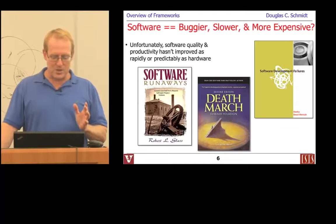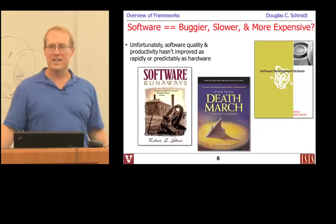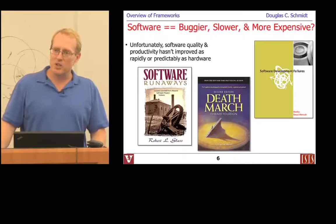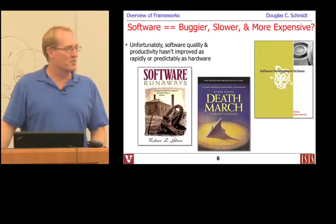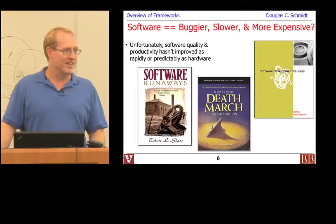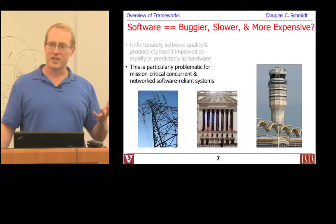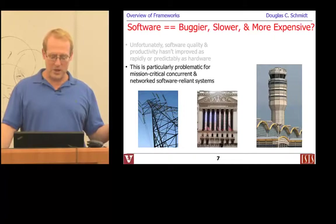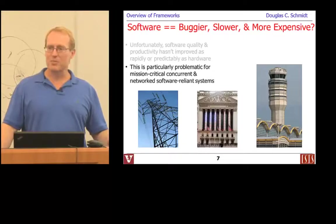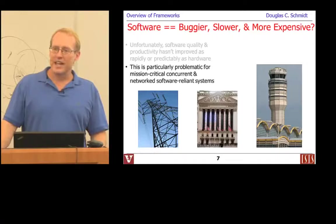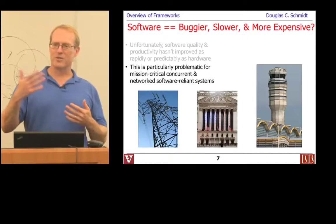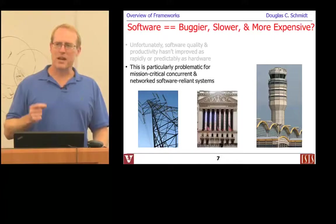As a consequence, there are all kinds of books written about software runaways, software death marches, and software development failures. A very large percentage of big software programs tend to fail in spectacular ways. This is particularly a problem in domains where you're trying to write mission or safety-critical software — where the right answer delivered too late becomes the wrong answer. Power grid management, financial services, air traffic management — Wall Street was even shut down for a little while recently due to a software failure.